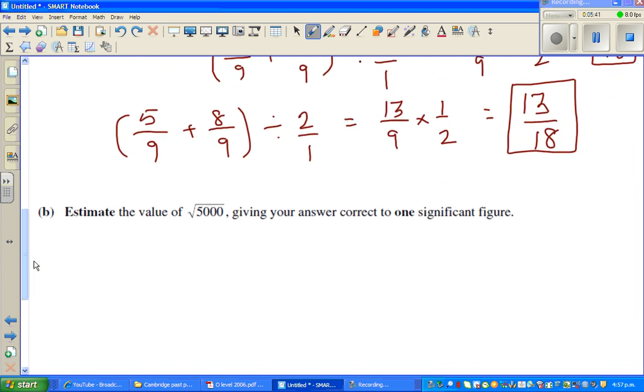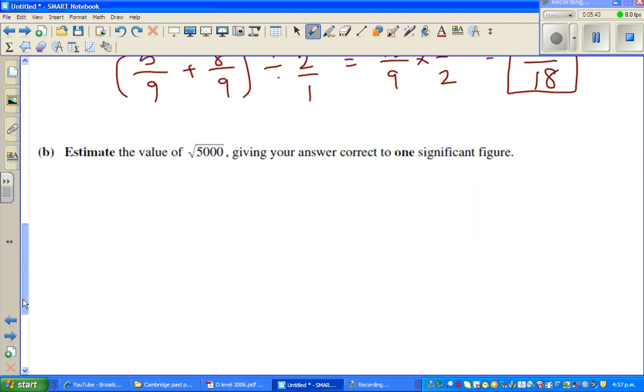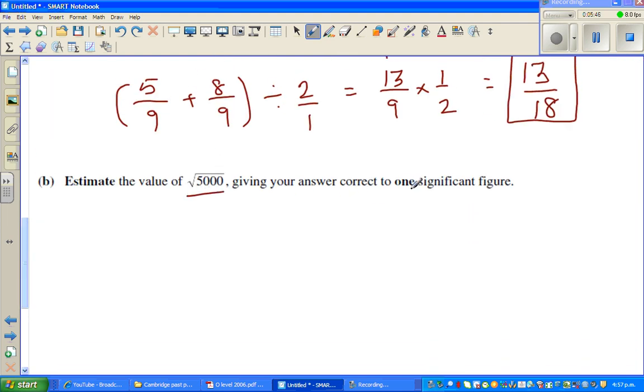Finally, estimate the value of square root of 5000 up to 1 significant figure. This is only an estimation. I know 40 squared is 1600. 50 squared is 2500. 60 squared is... I'll explain how to do this. It's pretty easy.